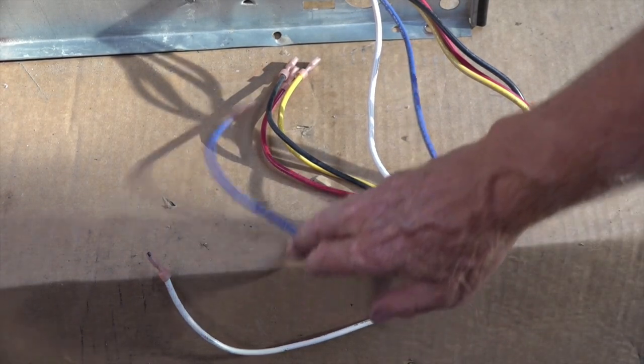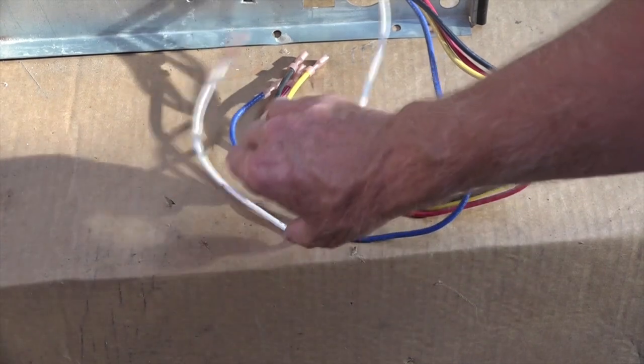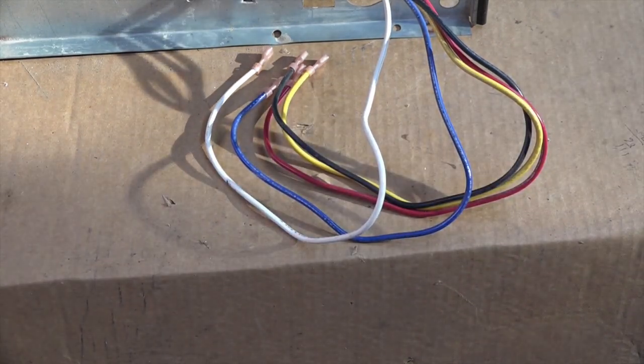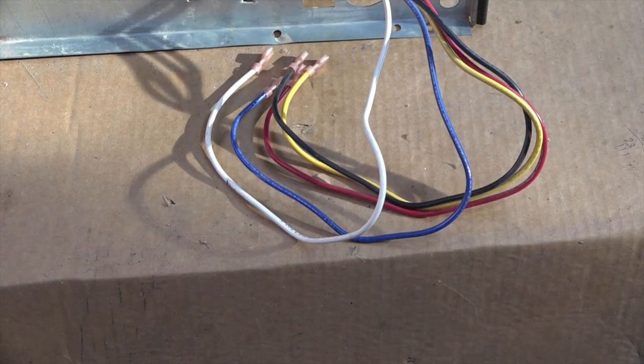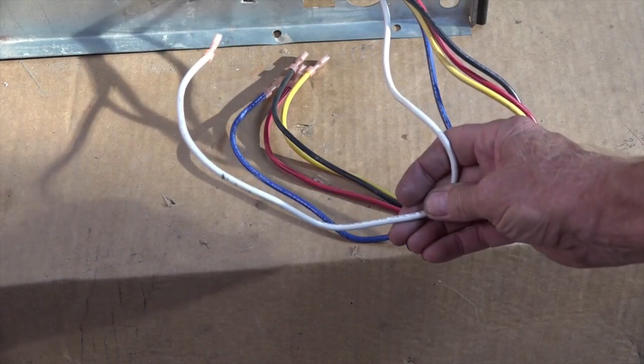Now here we have the array of wires going to the run winding. Okay, in most motors, not all of them, most motors, white is the common.